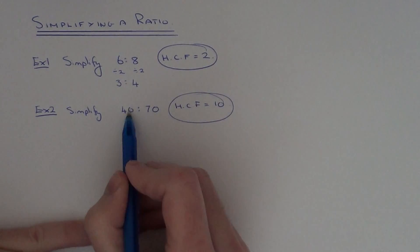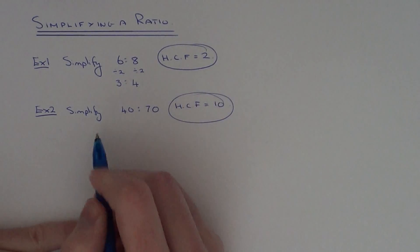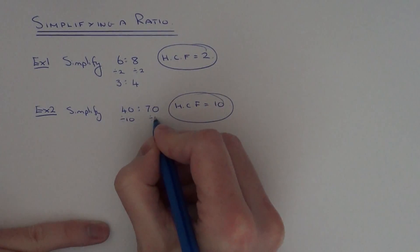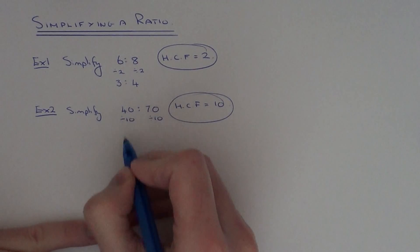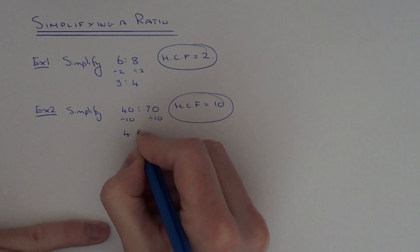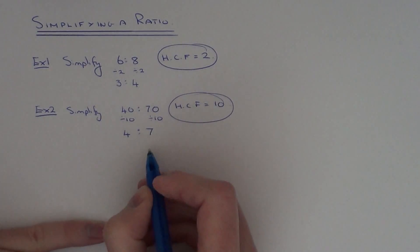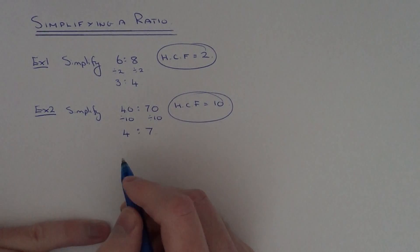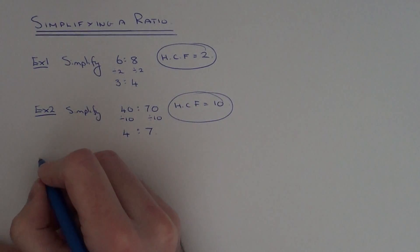Because 10 is the biggest number that goes into 40 and 70. So if we divide both sides of our ratio by 10, 40 divided by 10 is 4, 70 divided by 10 is 7. So again, we end up with a ratio of 4 to 7 which cannot be simplified any further. Let's do another example.